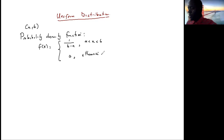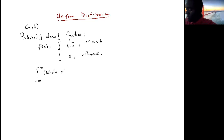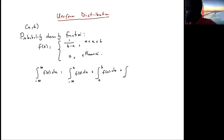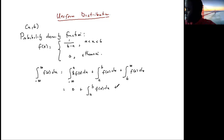What do we mean by zero otherwise? If you integrate from negative infinity to infinity of f(x) dx, you have three intervals: from negative infinity up to a, from a to b, and from b to positive infinity. Between the first and last intervals you are integrating zero, so you get zero. Only the middle part remains, and it is also zero anywhere outside that interval.